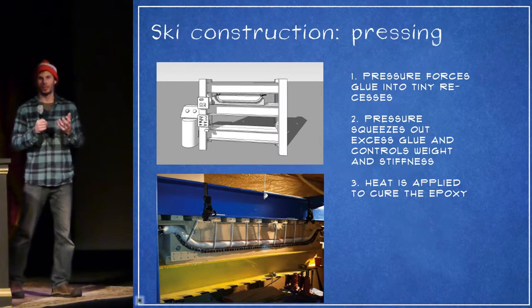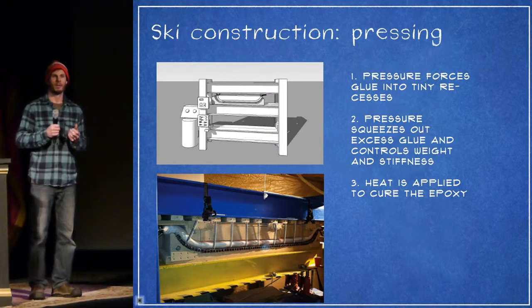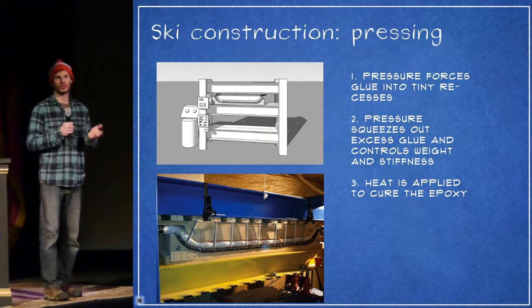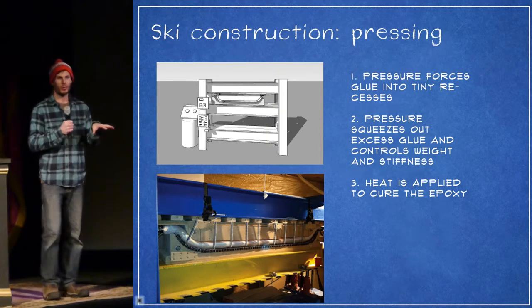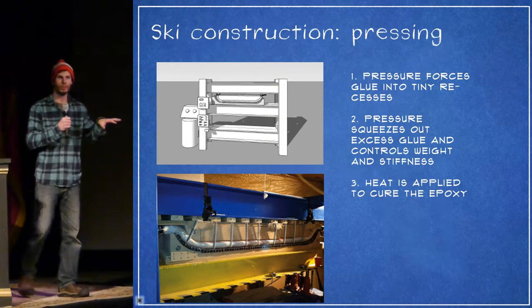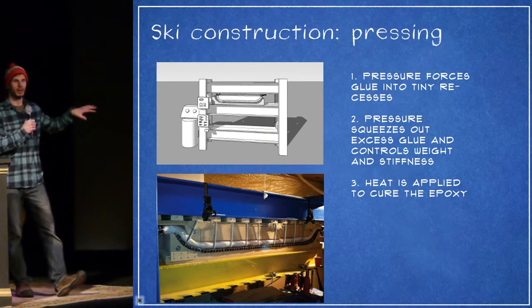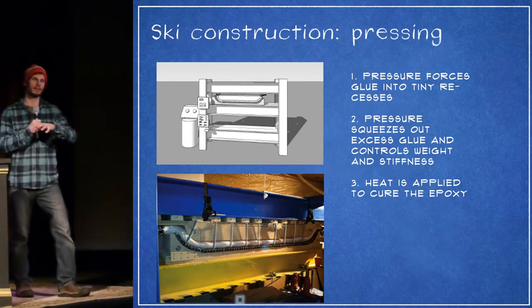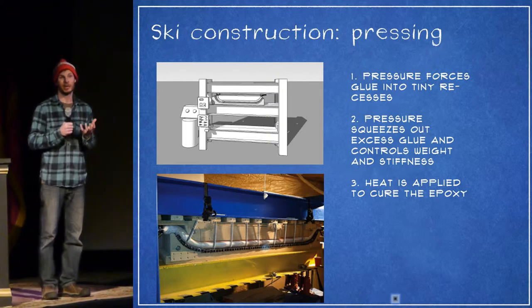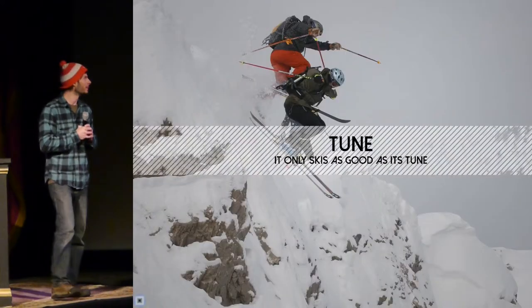Finally, all these components are combined together — the base, edge, core, and structural materials. They're put into a press, and pressure is applied to force them into a mold. That mold forms the ski to the tip, early rise, camber, and tail shape. Then heat is applied and cures that ski into a solid.